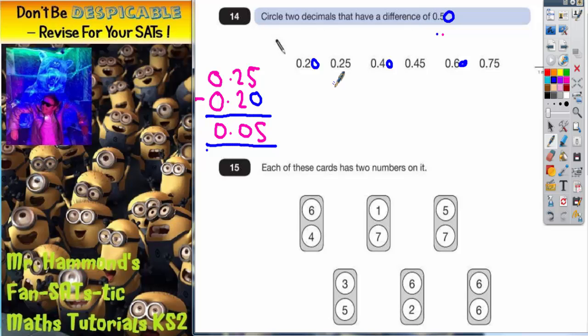Or we could even use money. We could say that this is 20 pence. We could say that this is 25 pence, 40 pence, 45 pence, 60 pence, 75 pence. And the difference is going to be 0.5 or 0.50, which is 50 pence. So which two have got a difference of 50 pence?